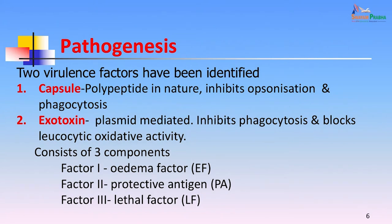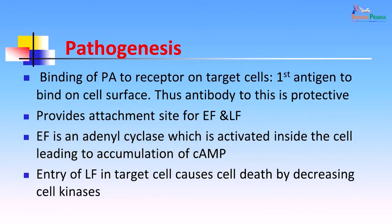Factor 1 is the edema factor (EF). Factor 2 is the protective antigen (PA) and Factor 3 is the lethal factor (LF). The protective antigen binds to receptors on the target cell first; any antibody that prevents this binding becomes protective and helps avoid anthrax. The protective antigen also provides the attachment site for the edema factor and lethal factor. The edema factor is an adenyl cyclase activated inside the cell, leading to accumulation of cyclic AMP and eventually cell death. The lethal factor also causes cell death by decreasing cellular kinases.